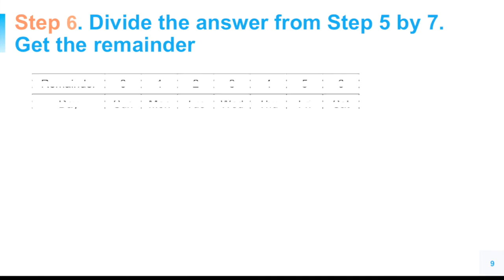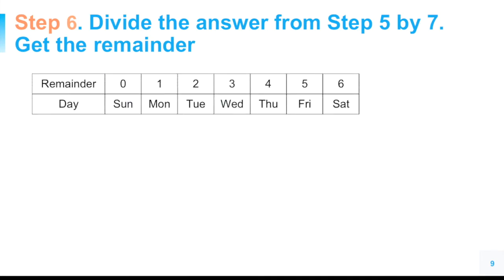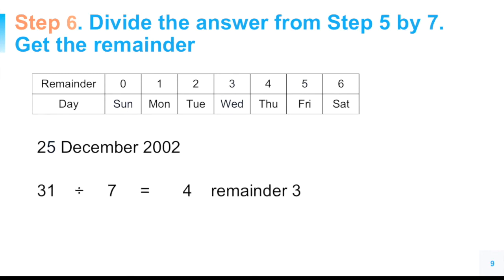Now let's go to step 6. The remainder when you divide the answer by 7 corresponds to a particular day. If the remainder is 0 — for example, 14 divided by 7 equals 2, with no remainder — the day is Sunday. If the remainder is 6, it is Saturday. So our total from step 5 was 31. Dividing 31 by 7 gives 4 remainder 3, because 4 times 7 is 28, plus 3 is 31. Looking at the table, a remainder of 3 corresponds to Wednesday. So December 25, 2002 was a Wednesday — and that is correct, my daughter was born on a Wednesday.